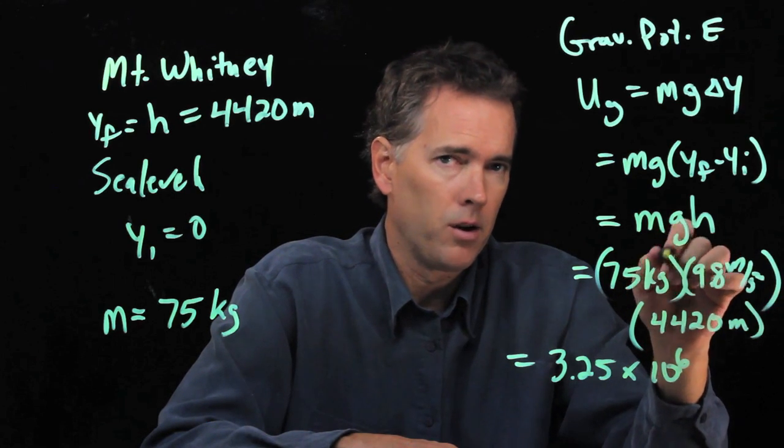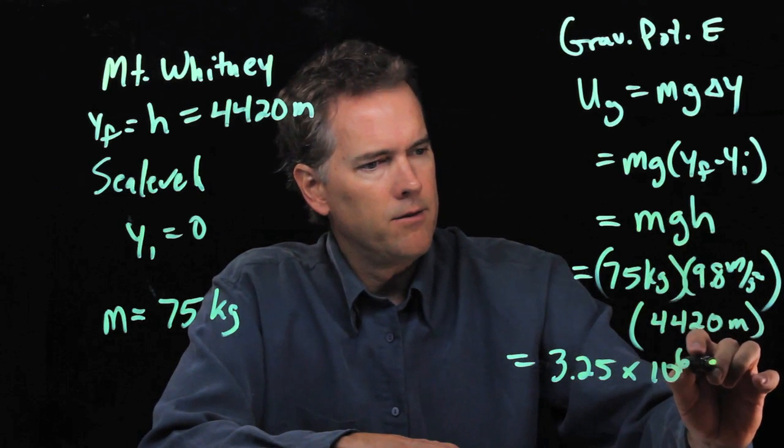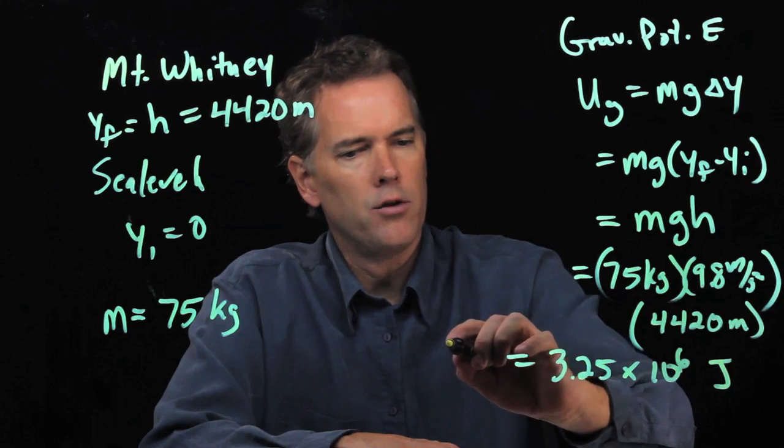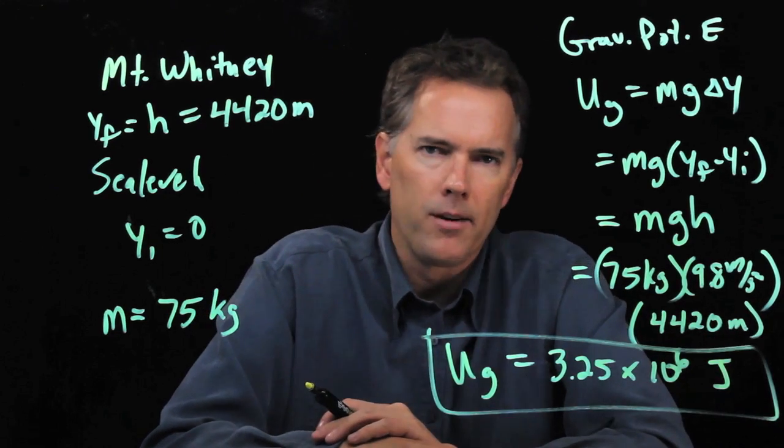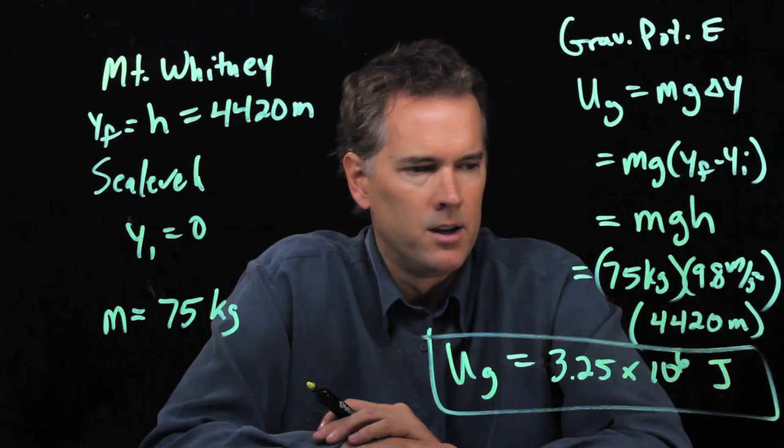Times another meter, so that's kilogram meters squared per second squared. And if you remember your SI units, that is units of joules. Okay, change of gravitational potential energy is 3.25 times 10 to the 6 joules.